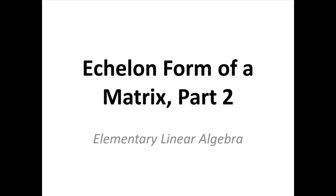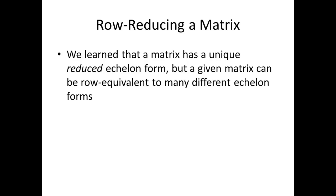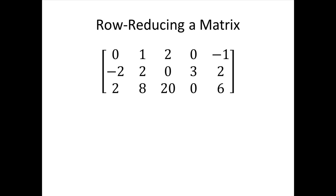In this video we'll continue our study of the echelon form of a matrix. In the previous video we learned how to check whether a matrix is in echelon form or reduced echelon form. We also learned that a matrix has a unique reduced echelon form, but a given matrix can be row equivalent to many different echelon forms. So in this video we'll be focusing on using row reduction to obtain an echelon form or the unique reduced echelon form of a given matrix.